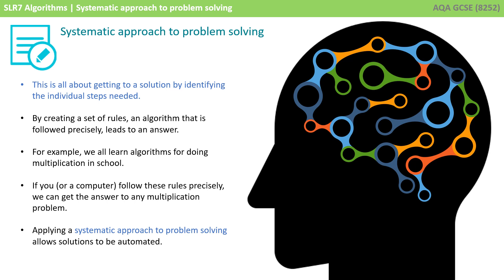Just as a simple example, you all learn algorithms for doing multiplication in school. If you or a computer follow these rules precisely, we can get to the answer for any multiplication problem. We simply apply the algorithm. By being able to apply a systematic approach to problem solving, we allow solutions to become automated.